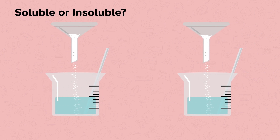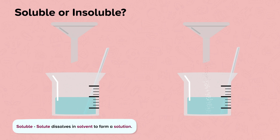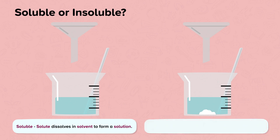We will now look at the difference between a soluble and an insoluble salt. On the left we can see that as the salt, which is the solute, is added to the water, which is the solvent, and the mixture is stirred, the salt dissolves. In this case we say the salt is soluble. On the right we can see that as the salt is added to the water and the mixture is stirred, the salt does not dissolve. In this case we say the salt is insoluble.